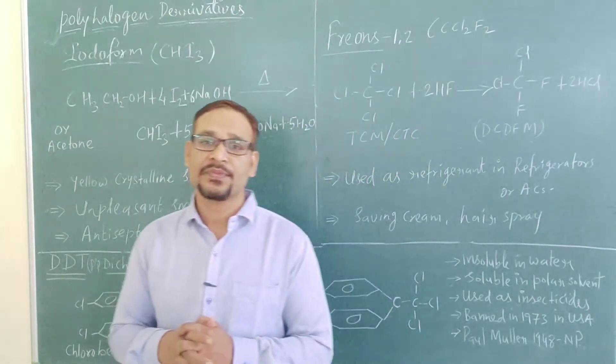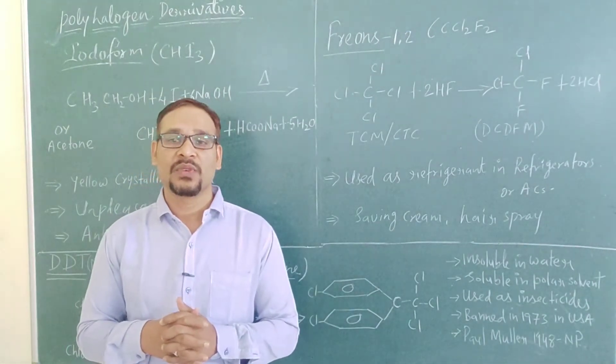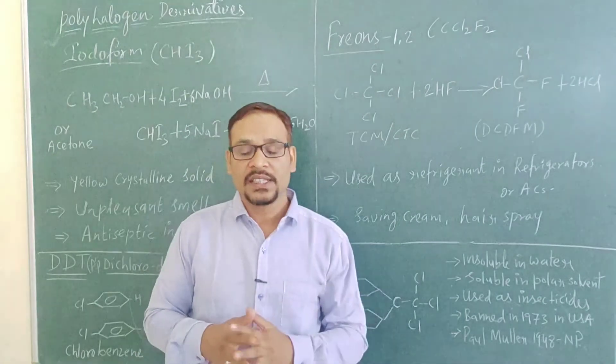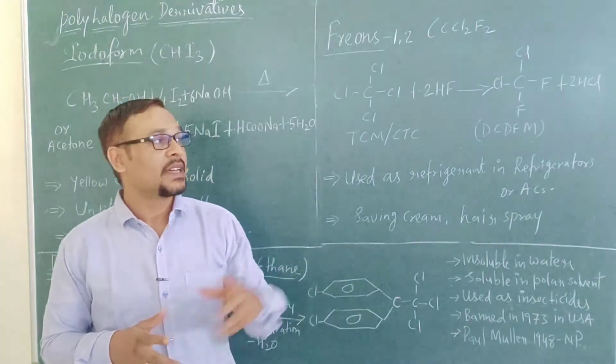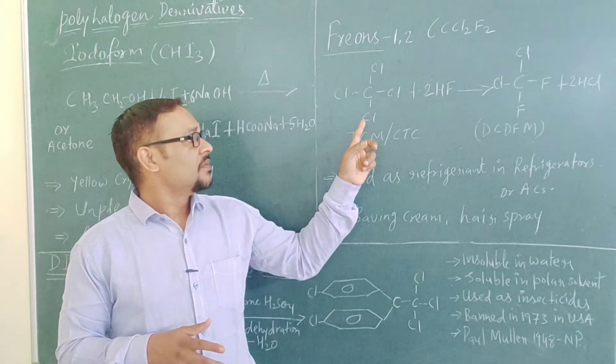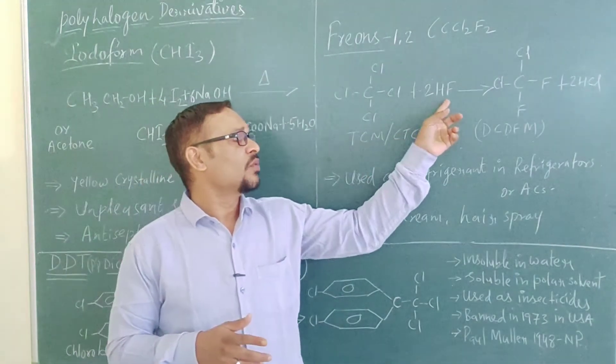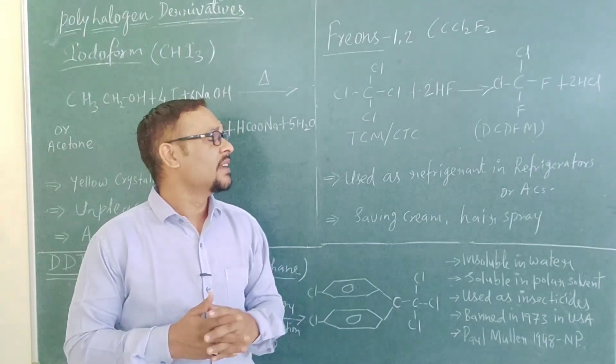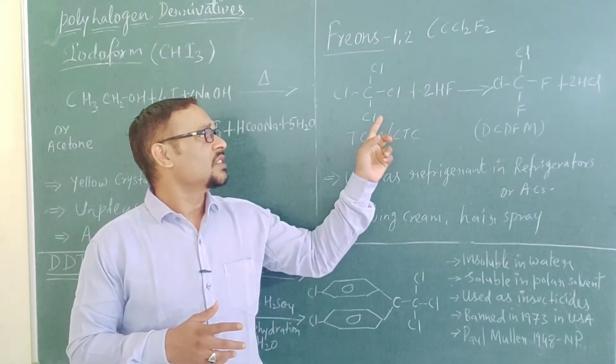This is all about iodoform in your syllabus. Now let's talk about the next very important halogen compound, that is Freon-12, also written as CCl2F2. This is the formula for freon. How is it prepared? It is prepared by carbon tetrachloride or tetrachloromethane when it reacts with hydrofluoric acid, two molecules of hydrofluoric acid.